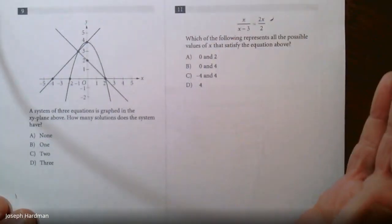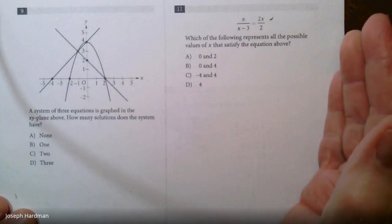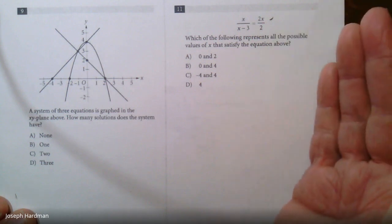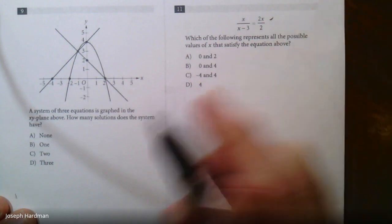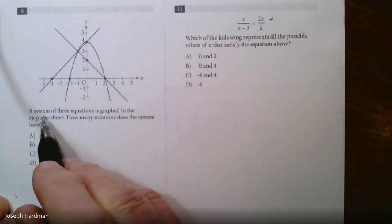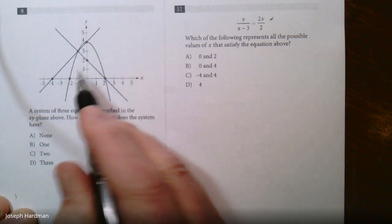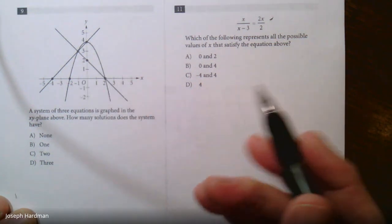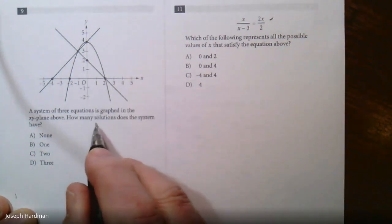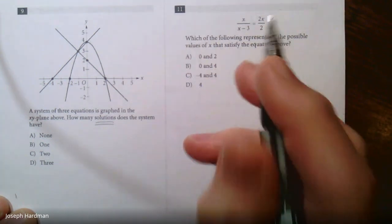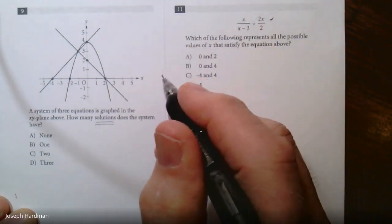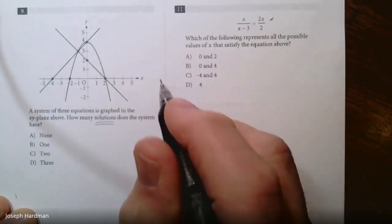Here's another type of easy problem I want you to look for. This is a no calculator kind of problem. It says a system of three equations is graphed on the xy plane above. How many solutions does the system have? When you see this word solution, if you got three lines, it is telling you where are all three touching at the same time.